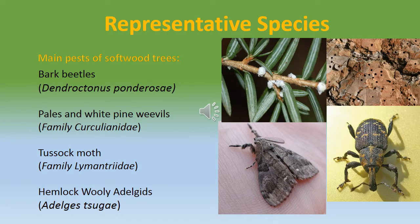Some of the representative species or main pests of softwood trees are bark beetles (Dendroctonus ponderosae), pales and white pine weevils (family Curculionidae), the tussock moth (family Lymantriidae), and hemlock woolly adelgids (Adelges tsugae).